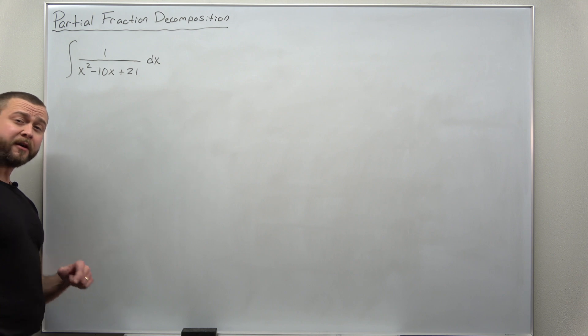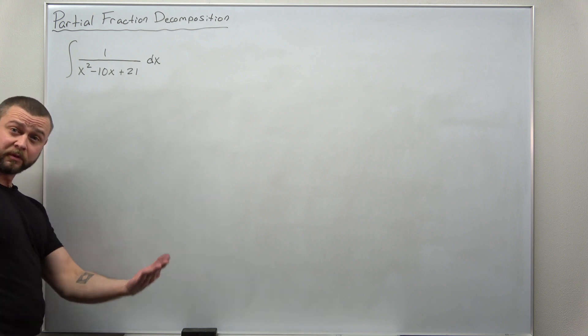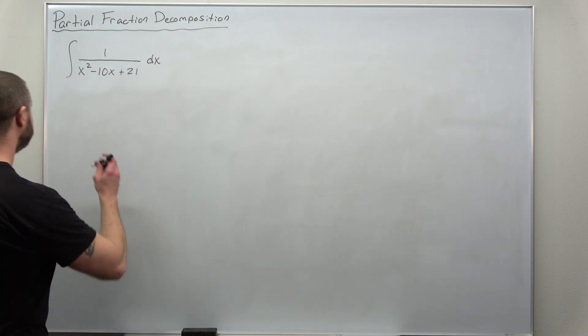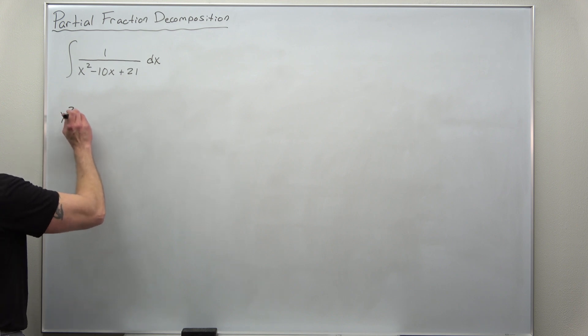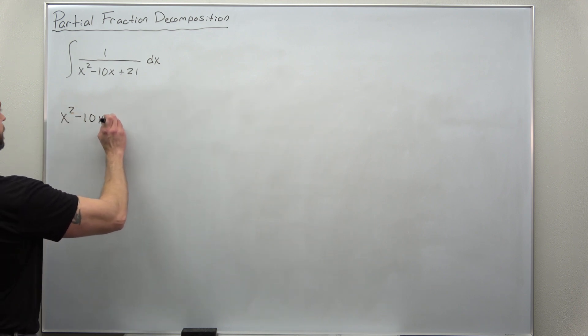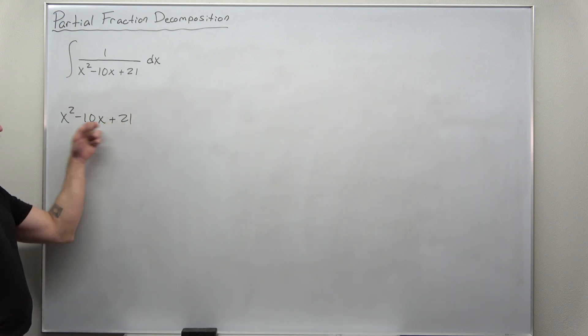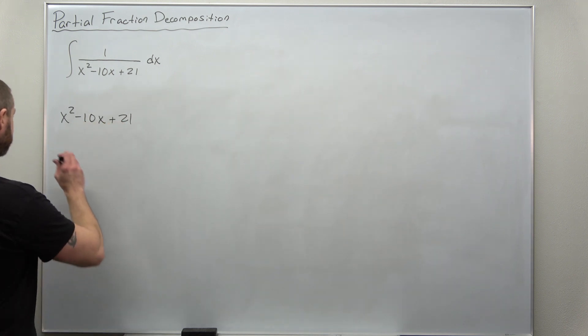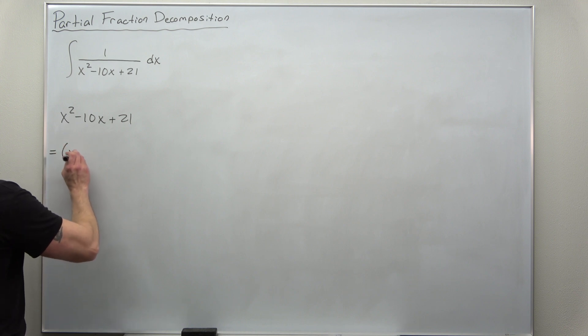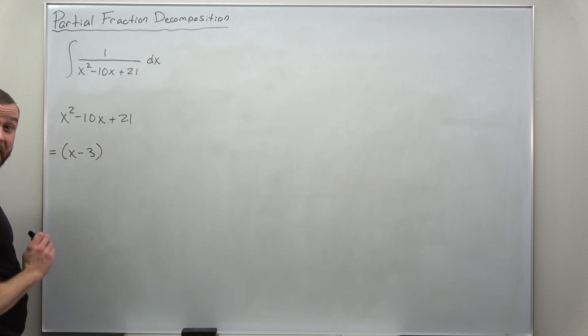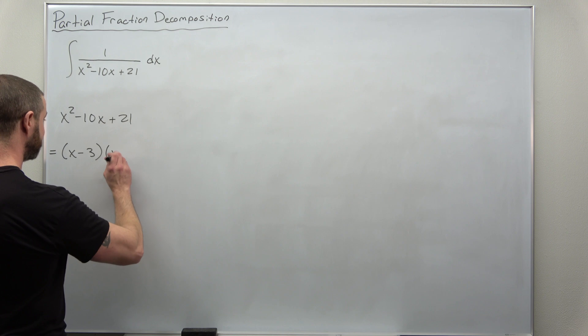Since our denominator isn't factored, let's first fully factor it. And this one should be pretty easy. We're going to look for numbers that multiply to positive 21 and add to negative 10. I think that should factor as x minus 3 times x minus 7.